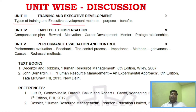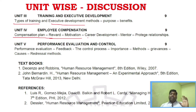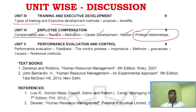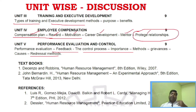In Unit 4, there are many questions, but the most important areas to focus on are: compensation plan — which is very, very important — reward, motivation, and mentoring/protégé relationships. Each of these areas carries separate marks, so focus on compensation plan, reward, motivation, and protégé relationships. That is more than enough for Unit 4.